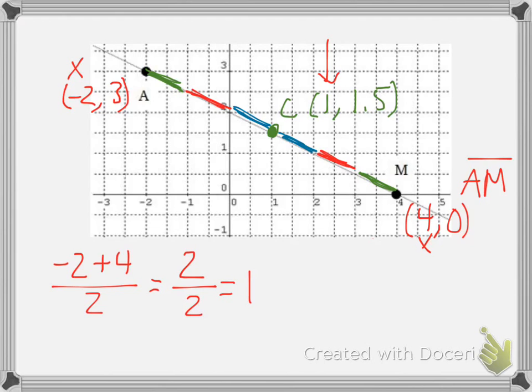We can do similarly for y's. Let's take 3 plus 0. Those are our two y coordinates. And divide by how many there are. That would be 3 over 2 or 1.5. Hey! That's the y coordinate of our midpoint. Isn't that amazing? So, let's summarize.